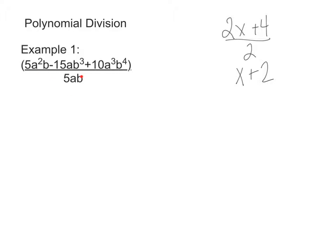I can take the 5AB and divide it into the 5A squared B. So I'm going to do that first: 5A squared B divided by 5AB. 5 divided by 5 is 1, B divided by B is 1, and A squared divided by A is A.